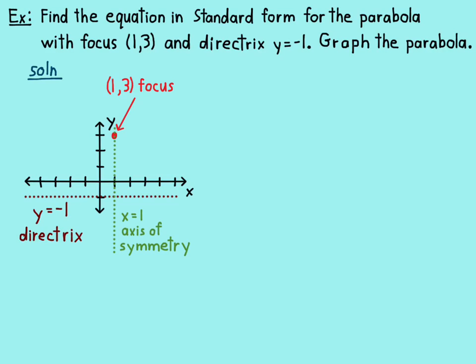That's important because they want me to write the equation out. Remember that 4p in the equation. So the axis of symmetry goes through the focus. It's x equals 1 and I can just see that from the graph.